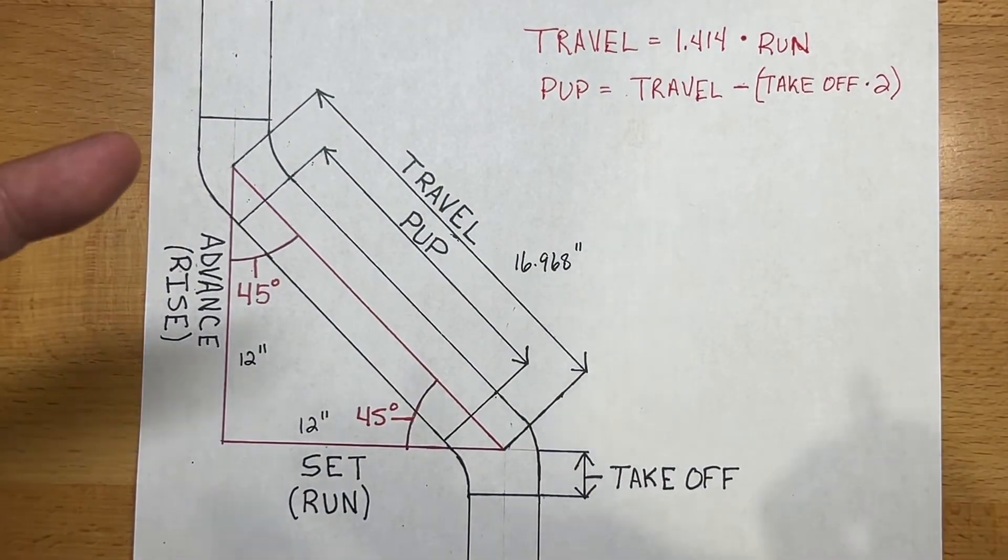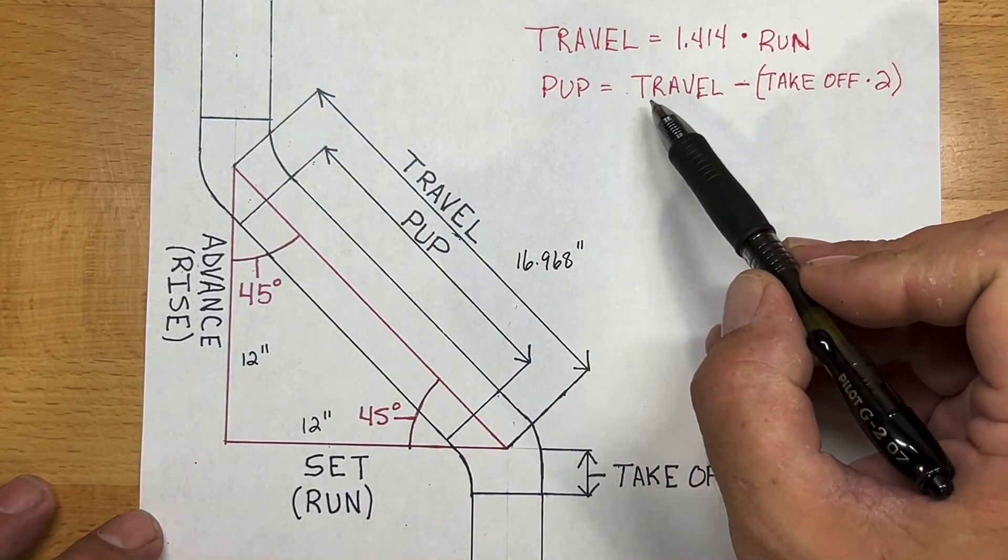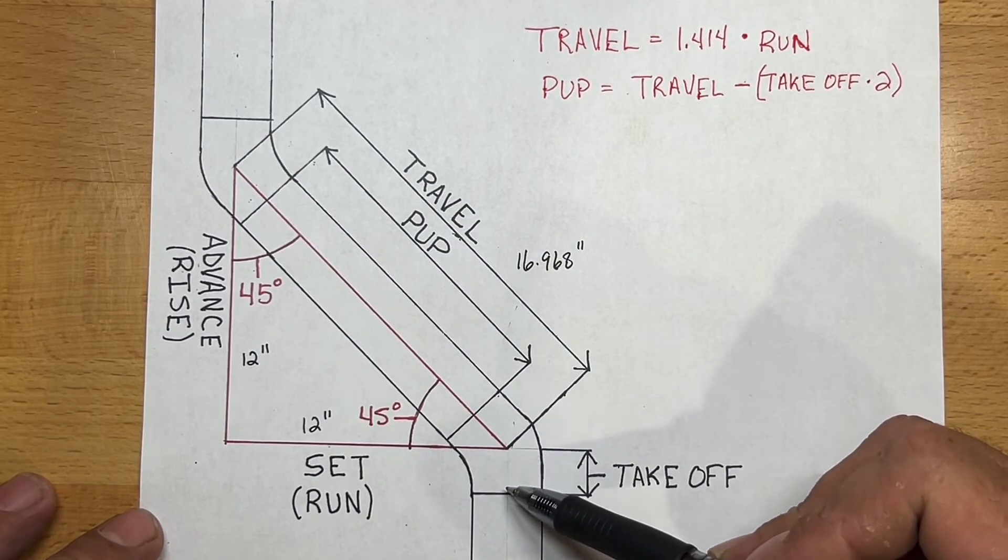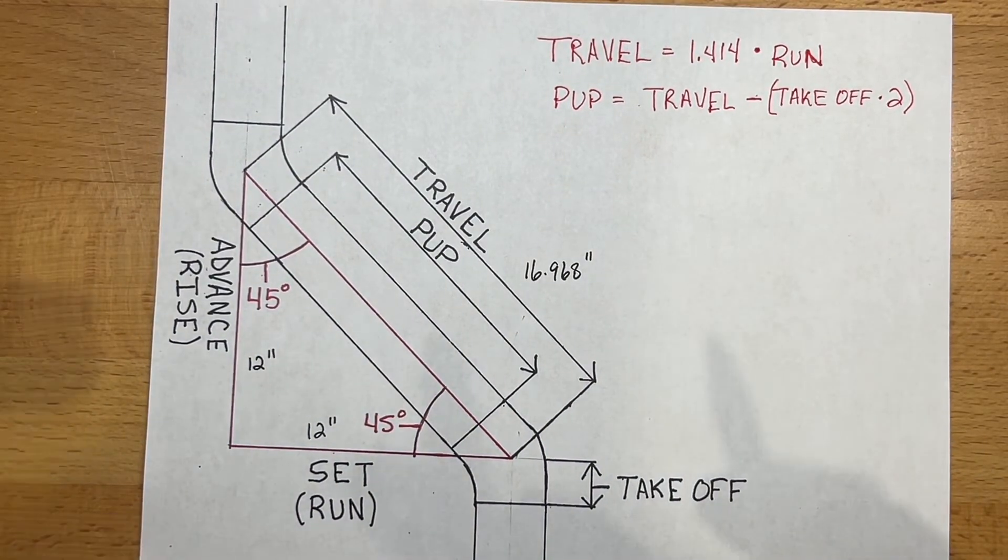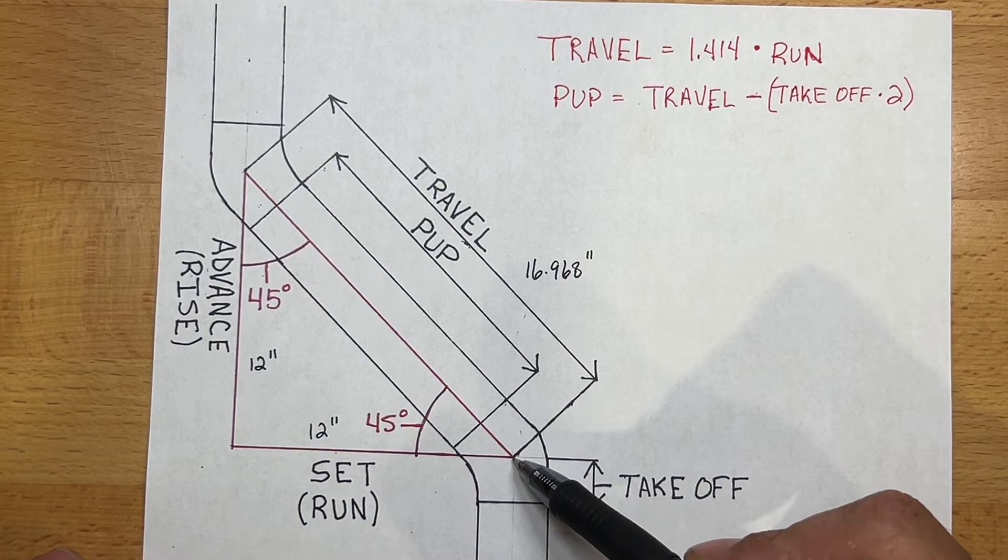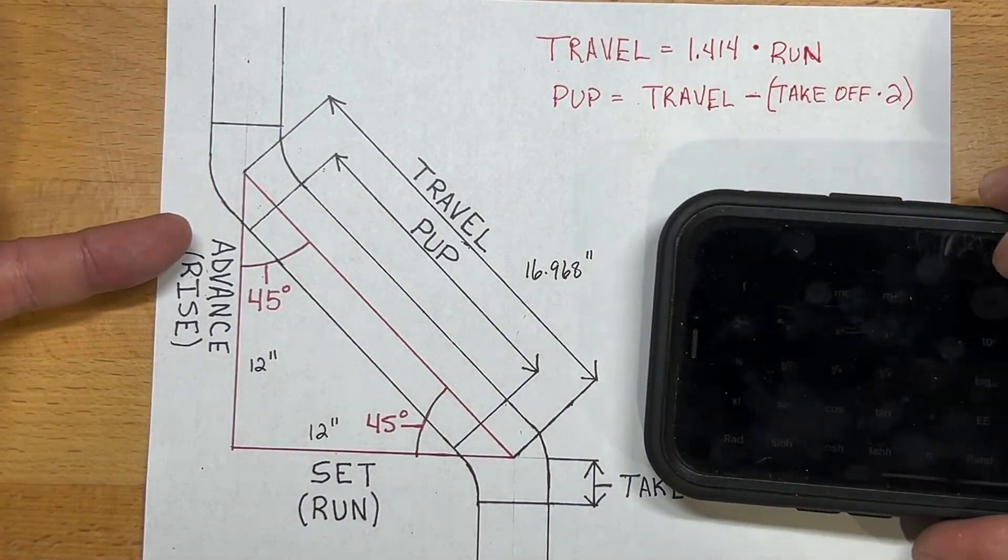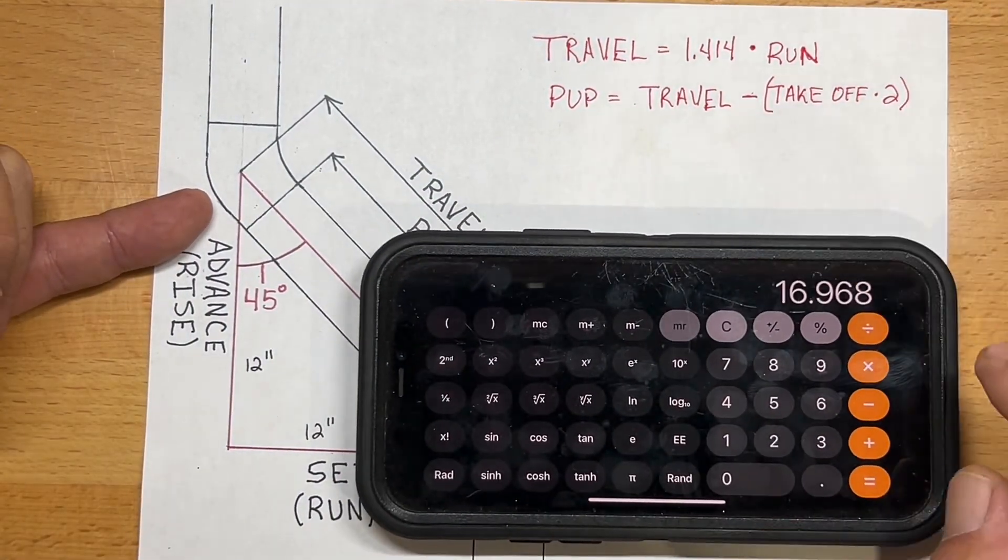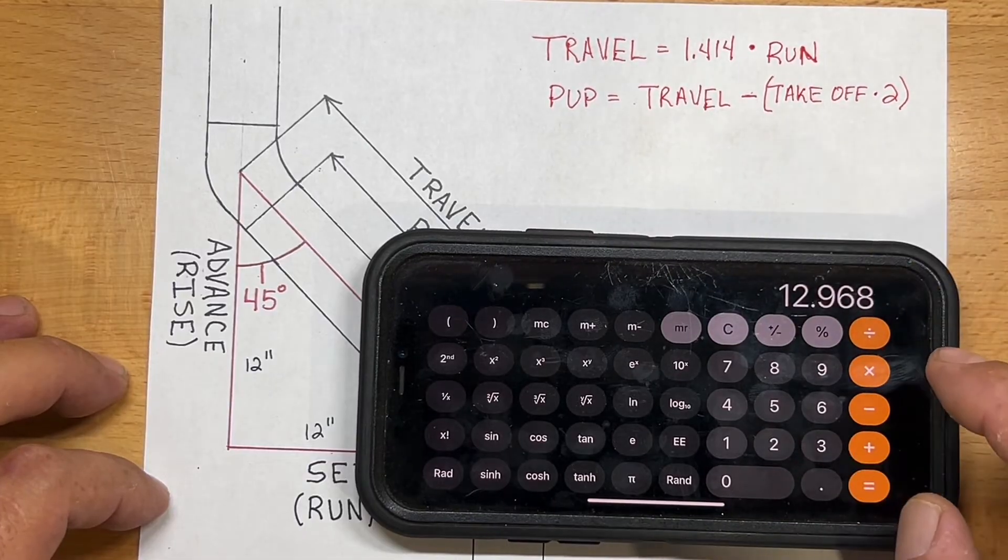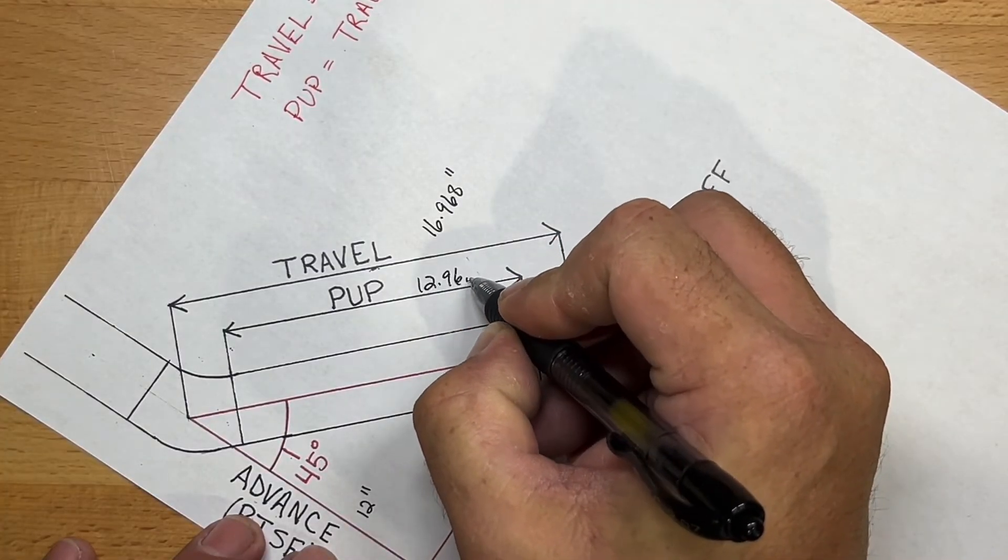Now the pup is the actual piece that goes in between your fittings. So what we have to do is your pup is equal to your travel minus the takeoff, and the takeoff of your fittings will be measured from the center to the flange. And depending on what type of fitting you're using, whether it's a socket fitting, a threaded fitting, or weld fitting, will determine your next step. But first we need to subtract the takeoff here and the takeoff up here. So in the case of a 3-inch, that takeoff is going to be 2 inches. So we'll take our 16.968, we'll subtract 2 inches for each side for a total of 4. And that makes our pup length 12.968. So we'll put our pup length as 12.968 inches.